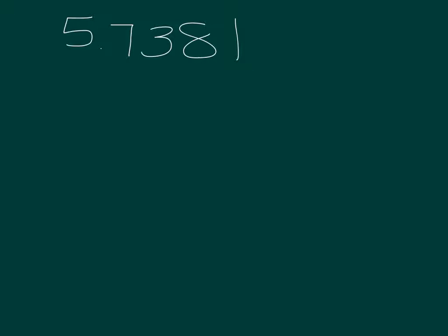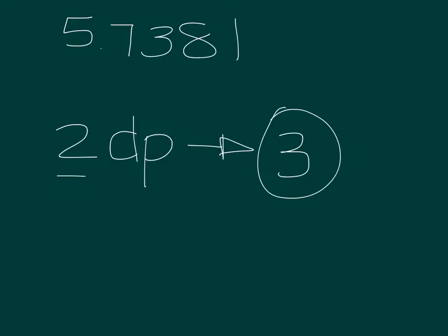The first important thing is if they say they want to 2dp, which is decimal places, that means you need to look at number three. So if they tell you two decimal places, you look at the next number.